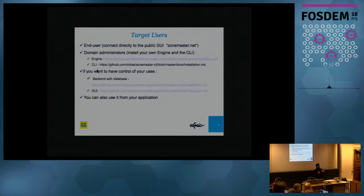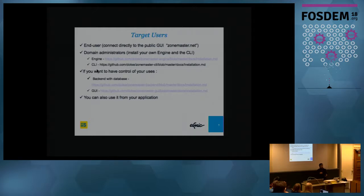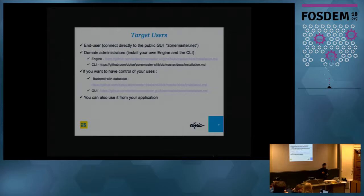If you are a registry, a registrar, or somebody who has a portfolio of domain names like 100,000 domain names, you want to test all the domain names in a batch, store results in a database, and see the history — whether it worked in 2015 and what the difference is now. You can do that by installing the backend and the GUI to have your own interface. You can also call the ZoneMaster Perl library directly from your own application.